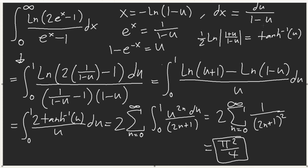Integrating that Taylor series from 0 to 1 gives us the sum from n=0 to ∞ of 1/(2n+1)². If you don't remember, this special sum equals π²/8, so our final answer is π²/4. Very sneaky — the substitution letting u = 1-e^(-x) is very hard to see because that 2 is really blockading us from using Taylor series.